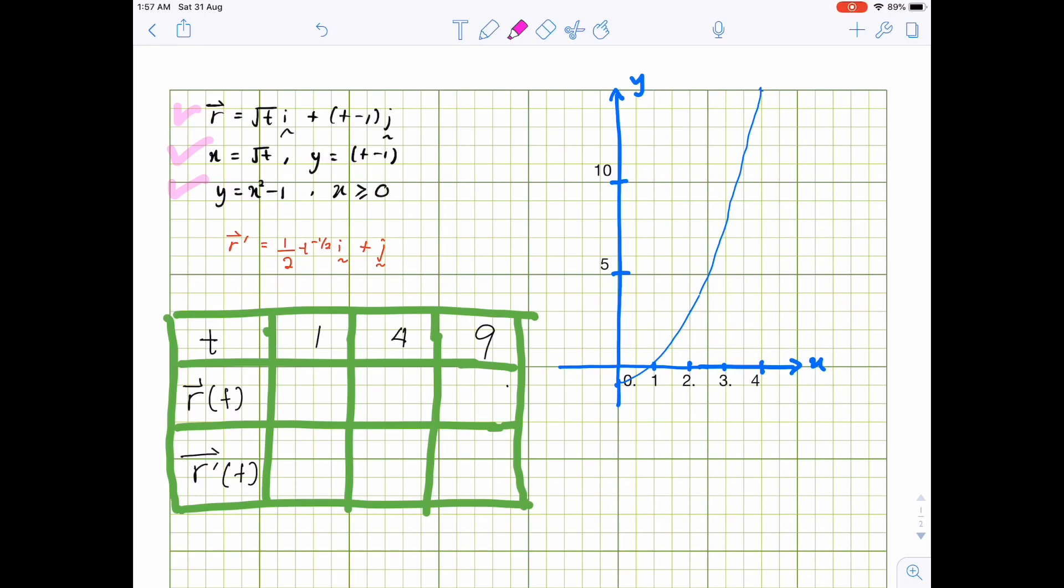With the constraint x must be greater or equal to zero, this is the graph that represents the parametric curve.